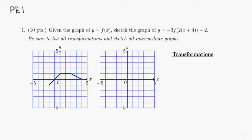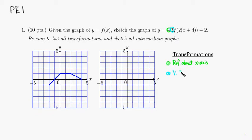Let's look at that. The first transformation is a reflection about the x-axis. The second one is going to be a vertical stretch by a factor of three.